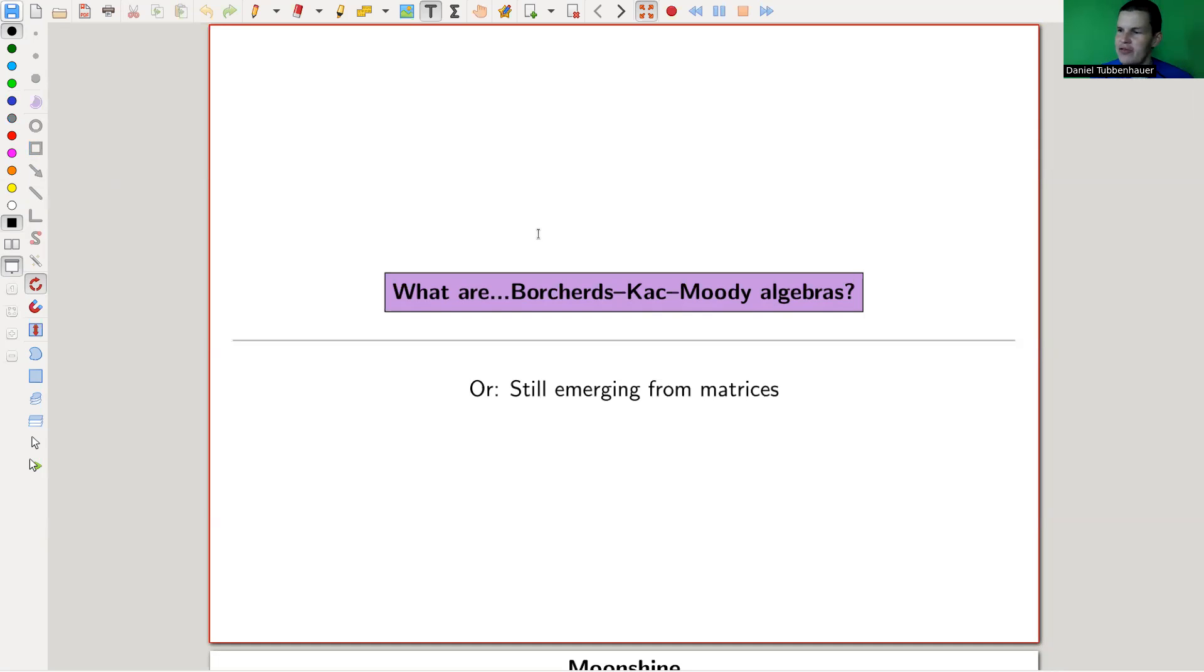About Kac-Moody algebras generalizations for other groups essentially, and I want to go to something that kind of still, even after all these years, still emerges from matrices in a more sophisticated way than a Lie algebra or semisimple or a Kac-Moody algebra, but essentially in the same way. It's kind of a really brilliant construction that I'm only really sketched because in the end we'll see it's a bit complicated.